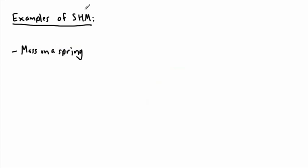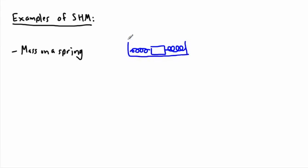Let's look at this with an example — a mass on a spring. Let's say I have a box here with springs attached to it, one on each side, attached to a wall, so it's free to go left and right. This middle point we call the equilibrium, because if you leave it long enough, it'll eventually end up there.